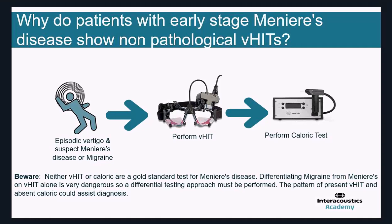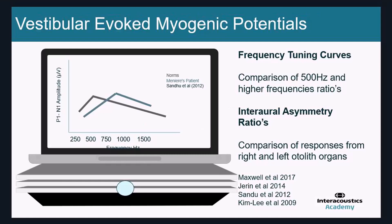Some of us will be familiar with vestibular-evoked myogenic potentials. Looking at Ménière's and migraine patients, there has been lots of research using frequency tuning curve comparisons — looking at the size of VEMP responses at 500 Hz and 1,000 Hz in patients with suspected Ménière's disease. There is clear evidence that the 1,000 Hz VEMP being larger than the 500 Hz VEMP is characteristic of Ménière's disease, though changes are much more likely to be evident in testing when the patient is close to an episode.